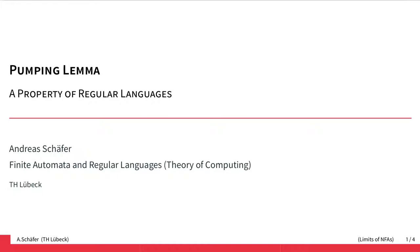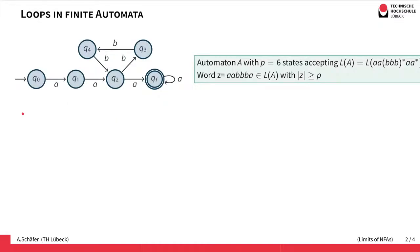We cannot use it to prove that a language is regular — that we can easily do by giving an automaton or a regular expression for it. Returning to the coffee dispenser example, we saw that if we have more coins than the automaton has states there was a problem: there needs to be a loop in the automaton. Now we look at the same idea in a more abstract case.